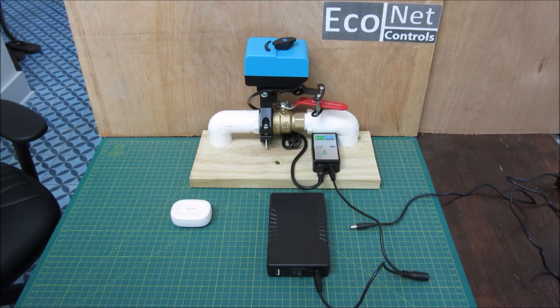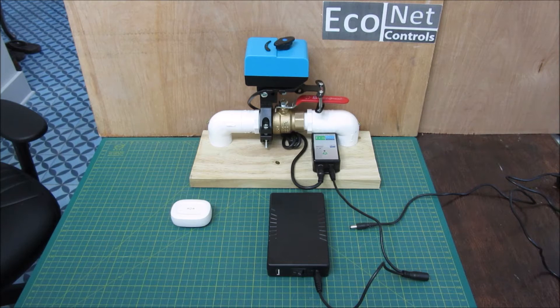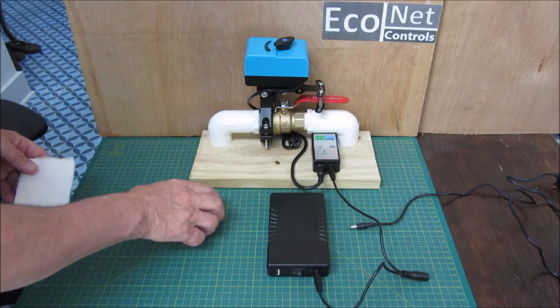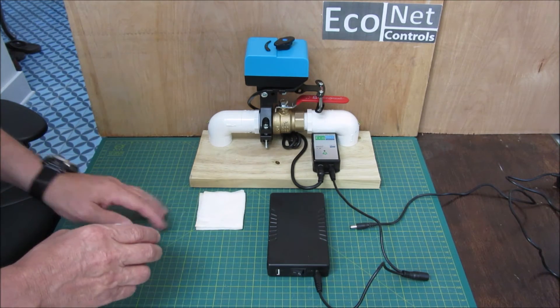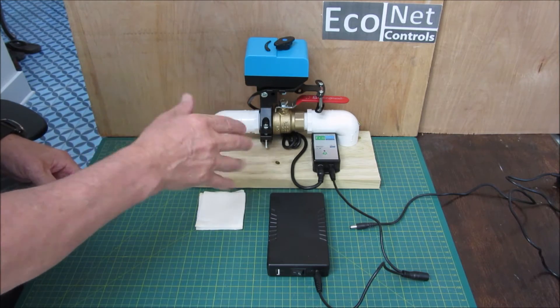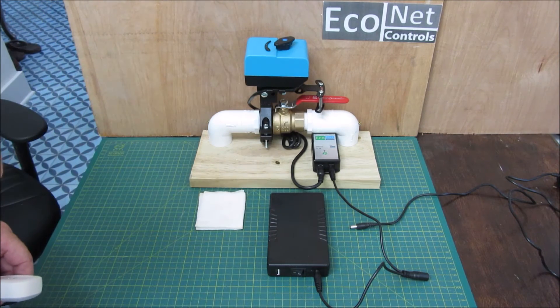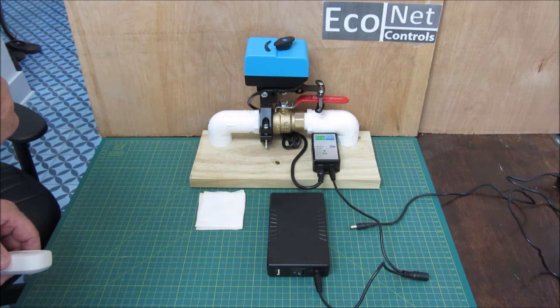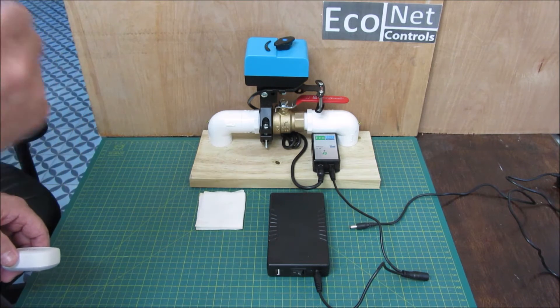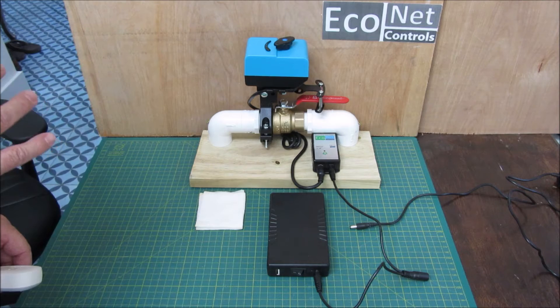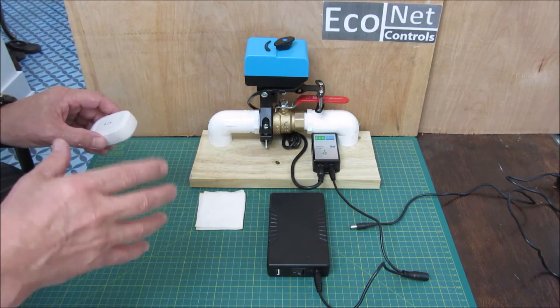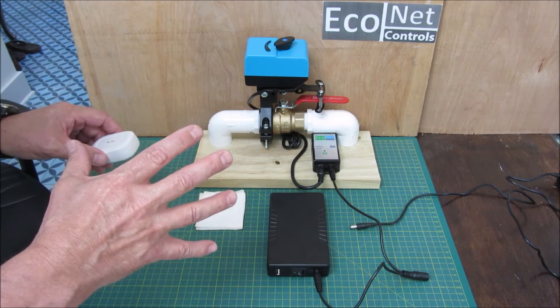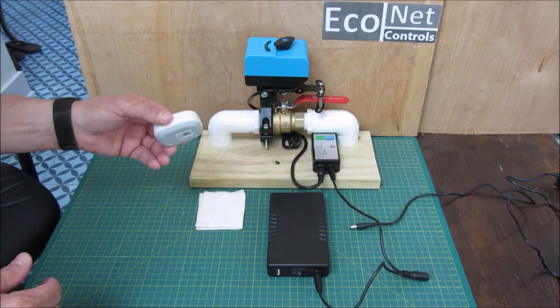And I'm just going to show you one more thing here before I pass you to Patrick to show you the current draw of the Bulldog. So we set up automation previously to shut off the water in the case of a leak. And I've just unplugged my hub from the power upstairs. It's running off of its battery backup and I've disconnected the internet from it. And this is because the automation is local in the SmartThings hub. It's still going to shut off the water in the case of a leak.